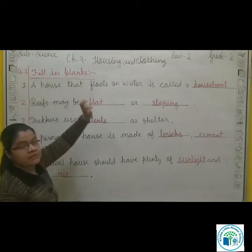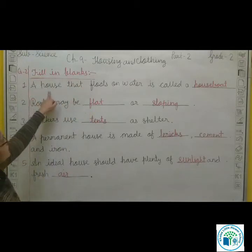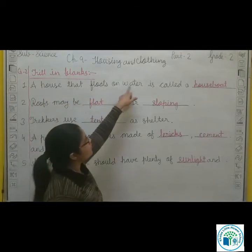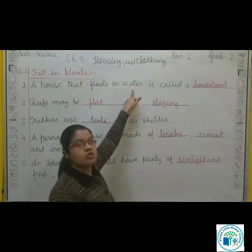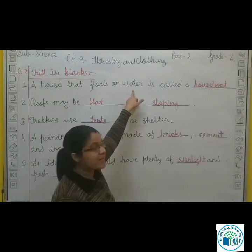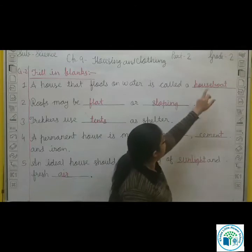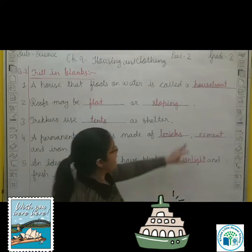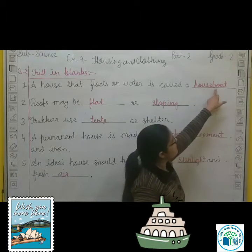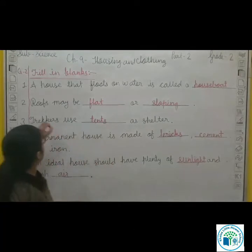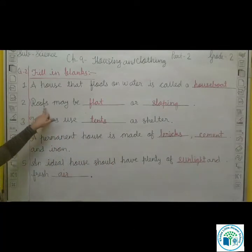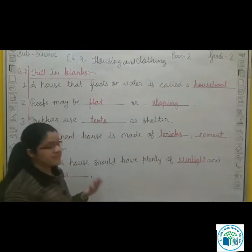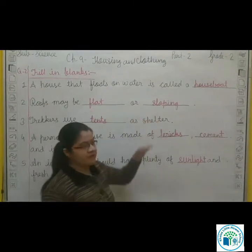Our next exercise is question number 2, fill in the blanks. A house — Houseboat — floats on water. Roofs can be flat or sloping.